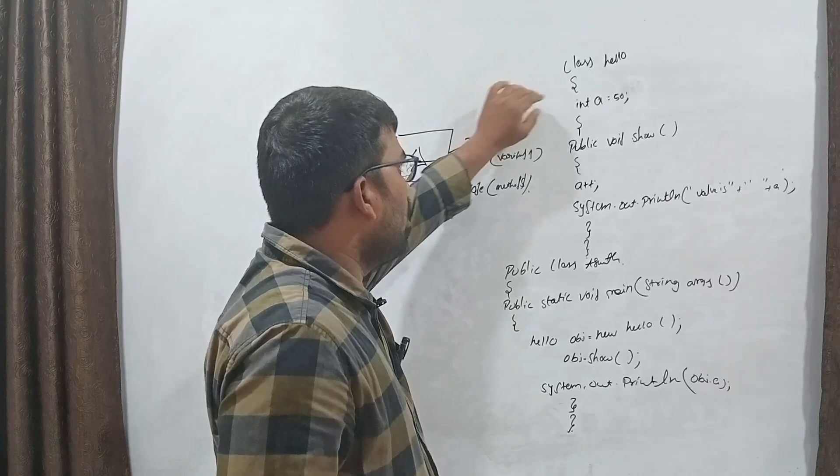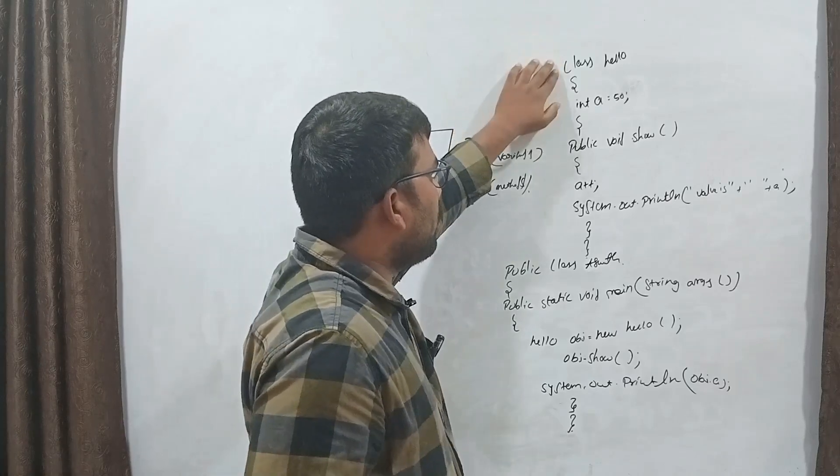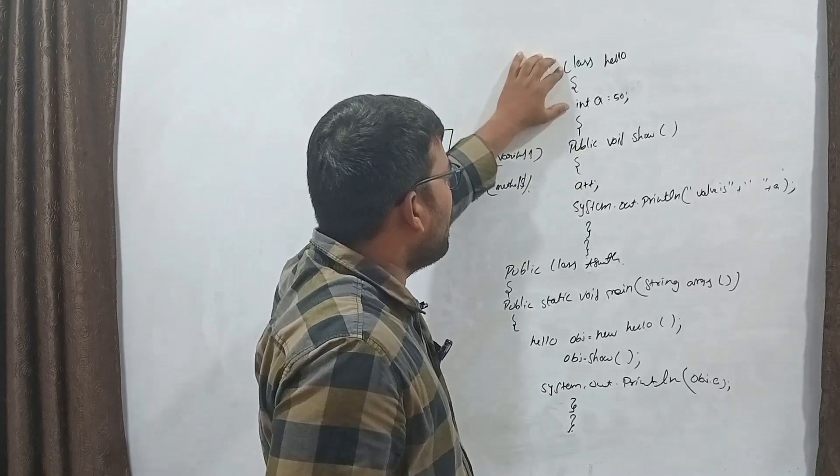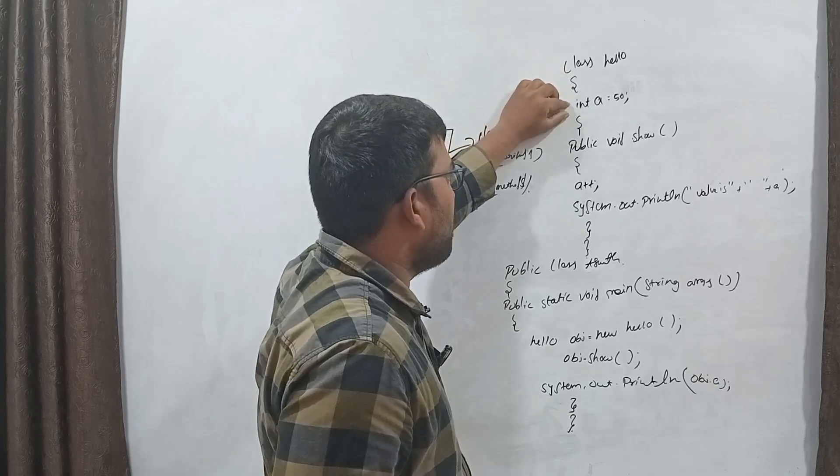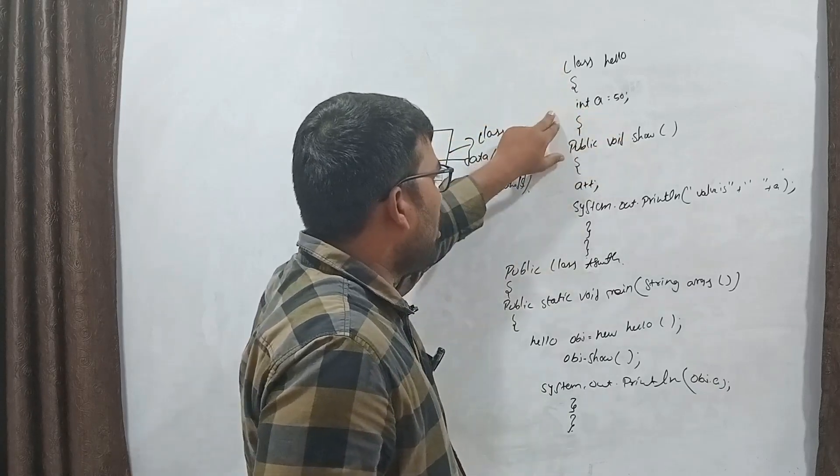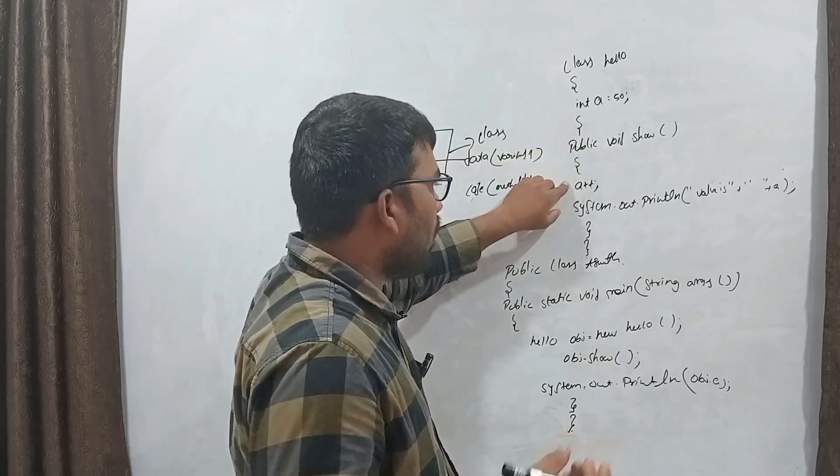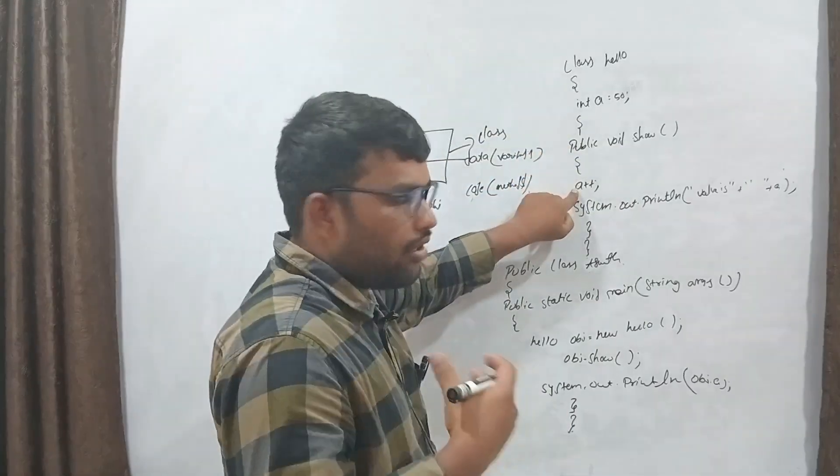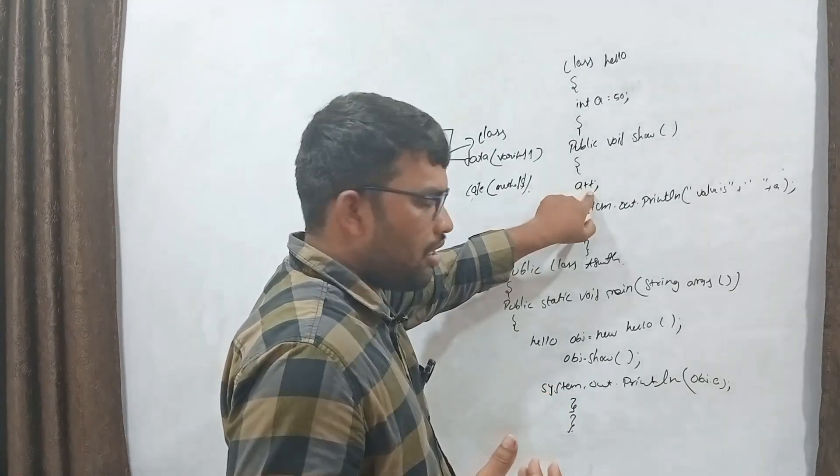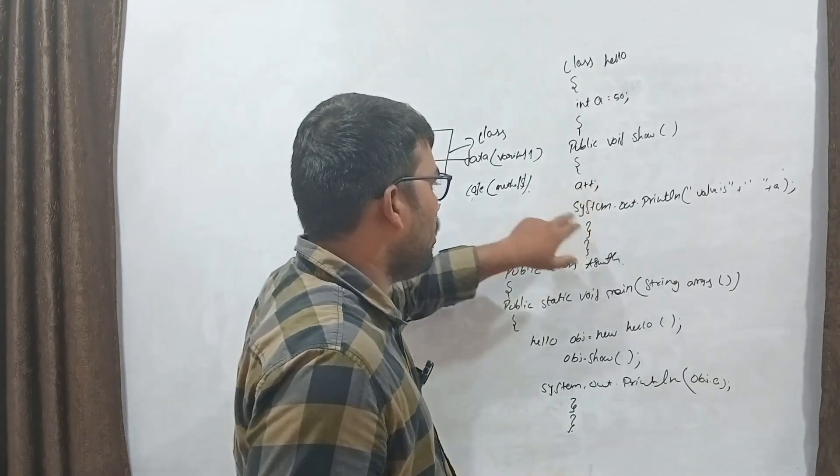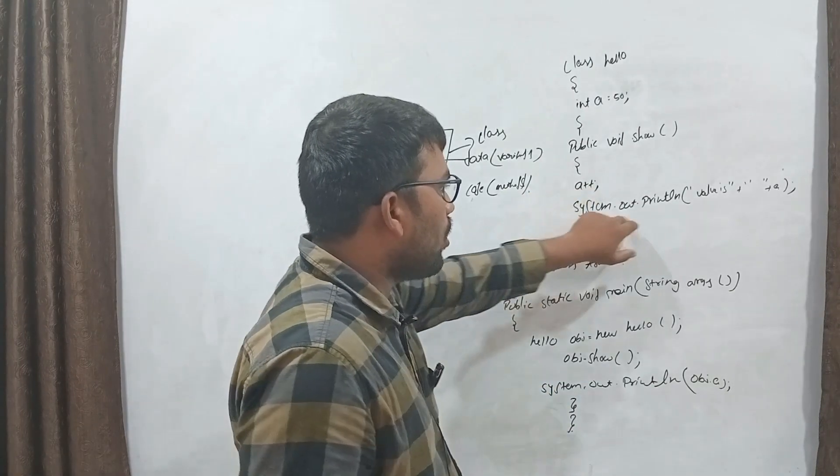This is an example. First we can take one class and set the variable a is equal to 50 in the method. Method is inside of the method, do the operation, increase the value. A is equal to a plus plus initialization. This is system.out.print statement.